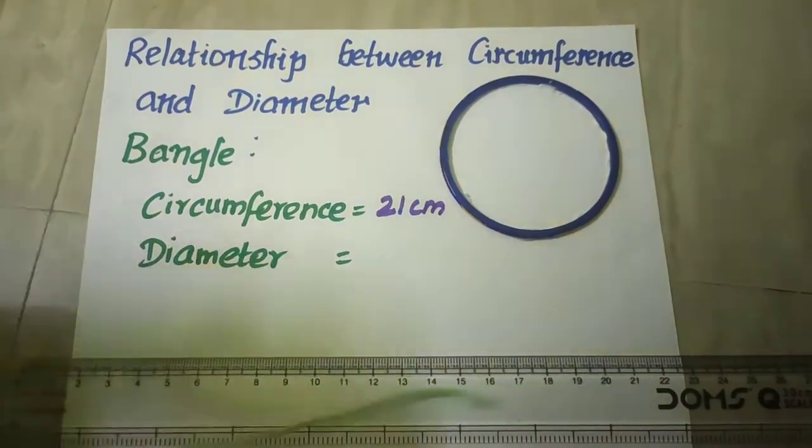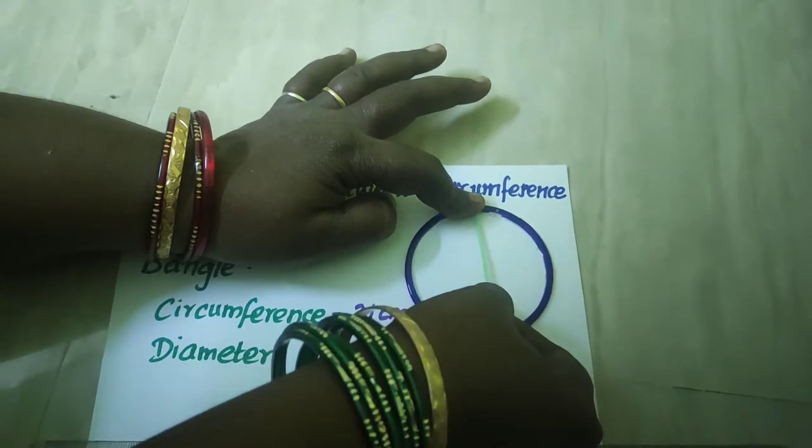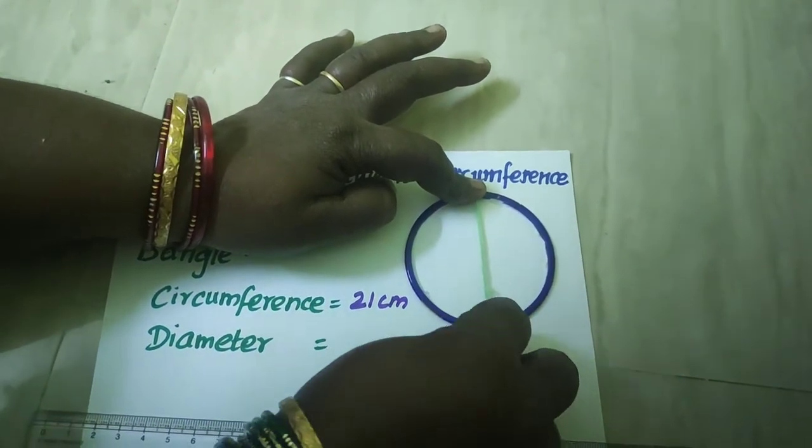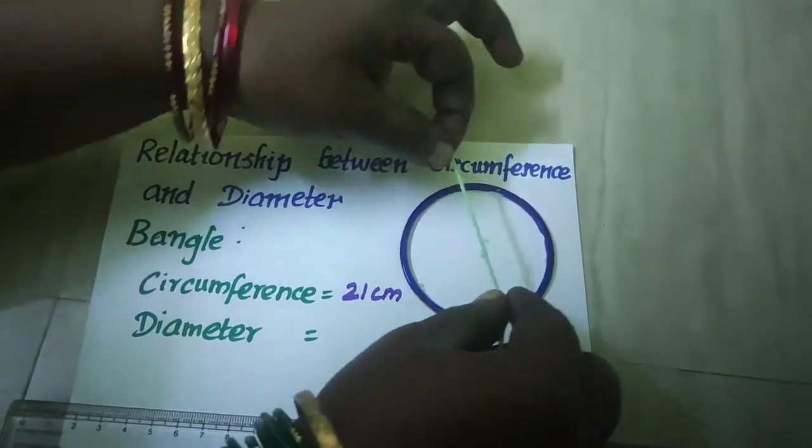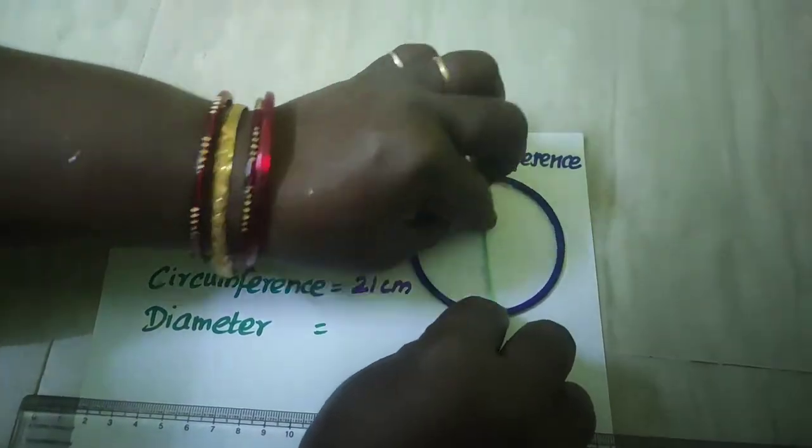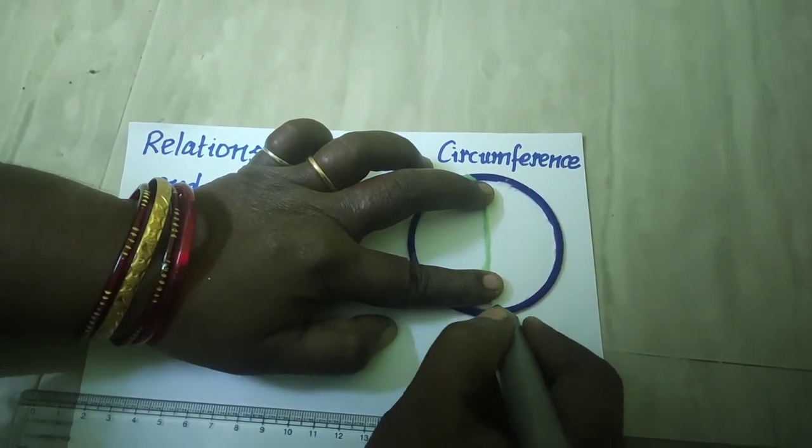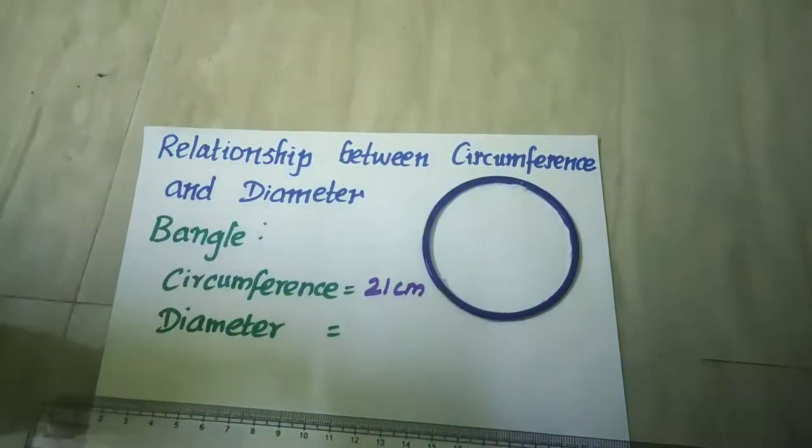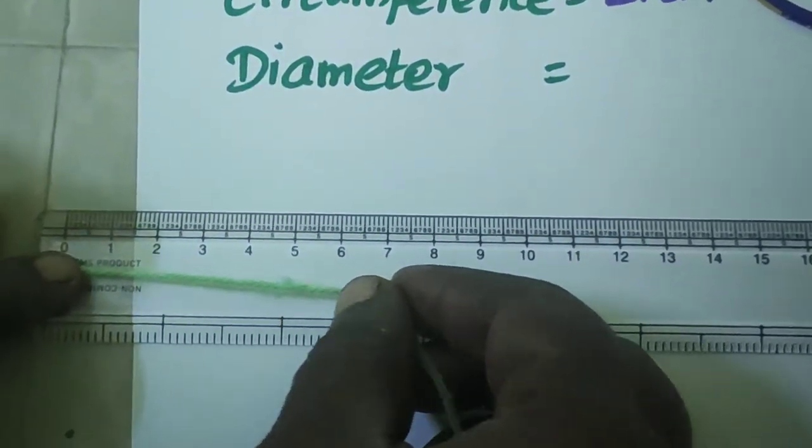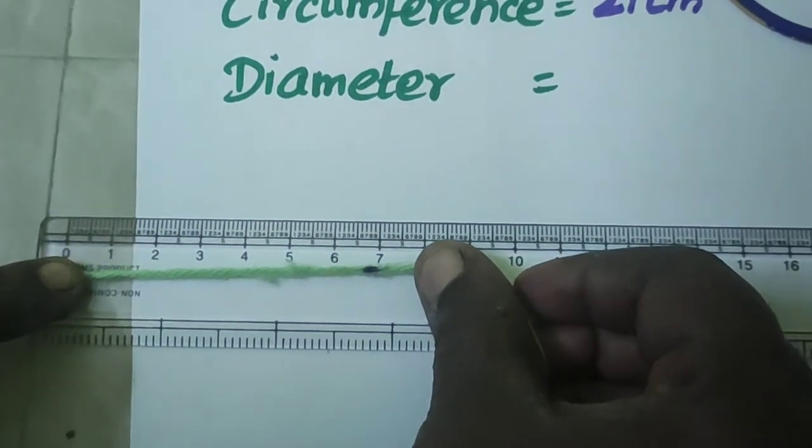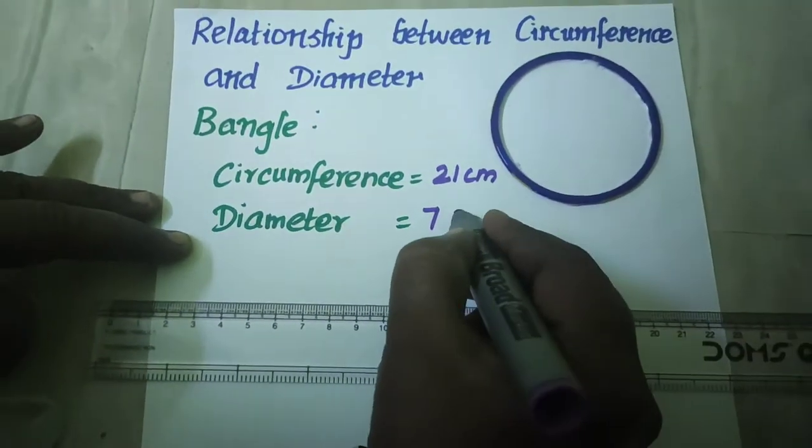Now let us measure the diameter. So diameter starts from one point and passes through the center and ends at another point on the circle. So this is your diameter. You can keep it like this or this anyway. So here I am measuring the diameter and I am going to keep a mark. Now let us measure up to this mark. So now starting from zero, you see children what is your diameter now? It is 7 centimeters.